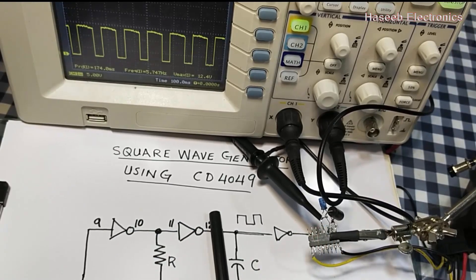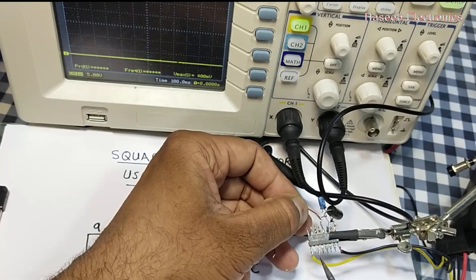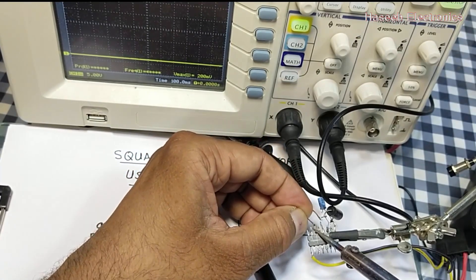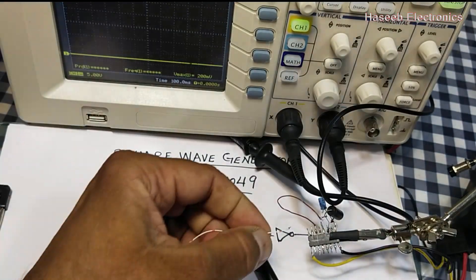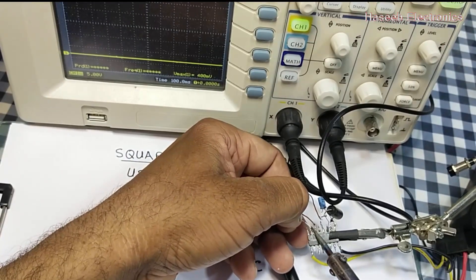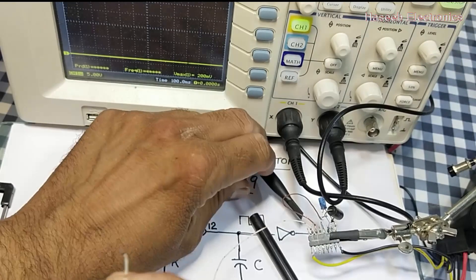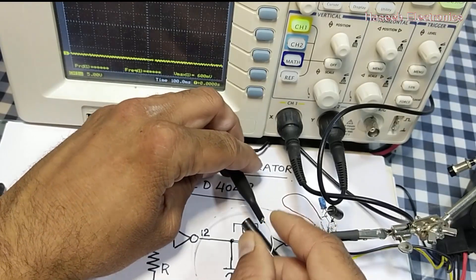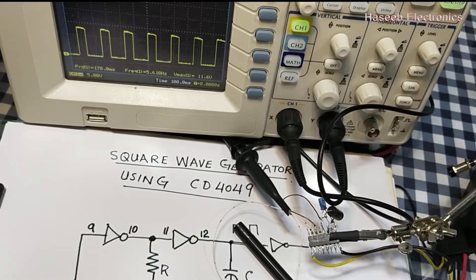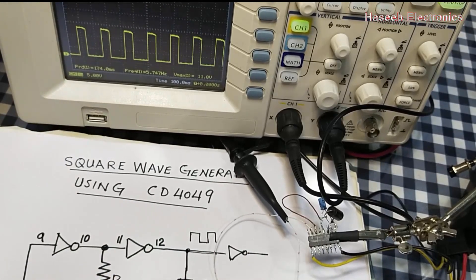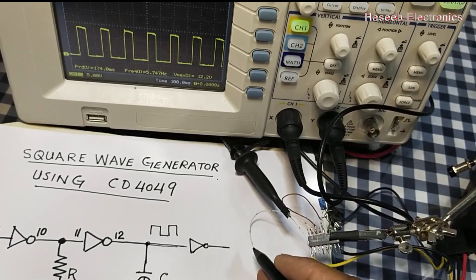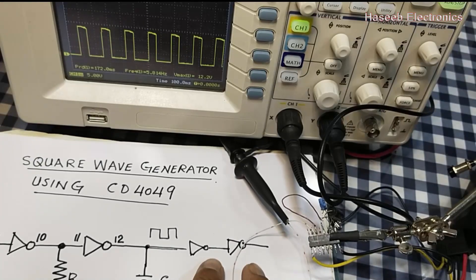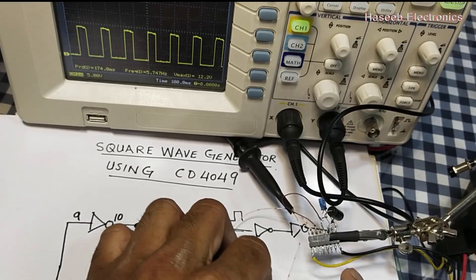We connect the oscillator output to the next inverter. Pin number 13 on this IC is blank — not connected — so we will connect to pin number 14, which is input, and pin number 15 is output. Now we are taking output from this next inverter, and if we add another inverter in series we will get two inverted signals complementary to each other.